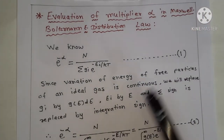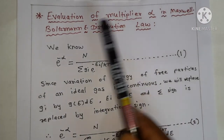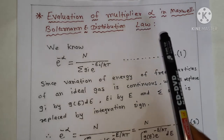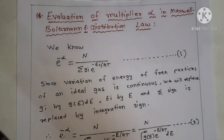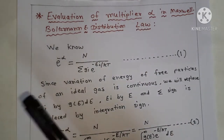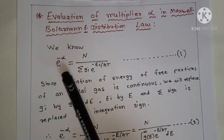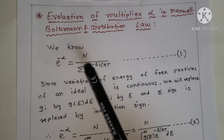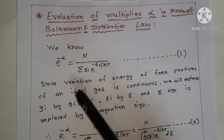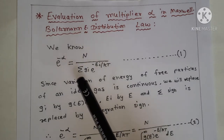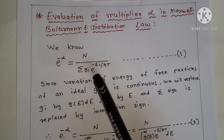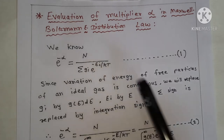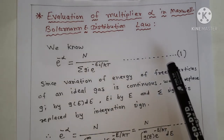Evaluation of multiplier alpha in Maxwell-Boltzmann energy distribution law. Students, we know e raised to minus alpha is equal to n upon summation g_i e raised to minus e_i upon kT. Equation first.